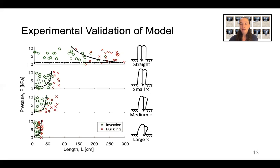We did the same experiment for small-curvature, medium-curvature, and large-curvature robots. The model matches the data well in all cases we tested. We can see that the straighter the robot, the longer the length at which it tends to invert without buckling.